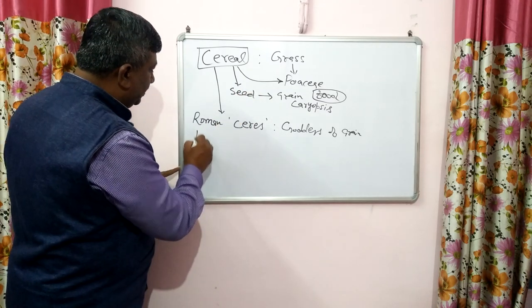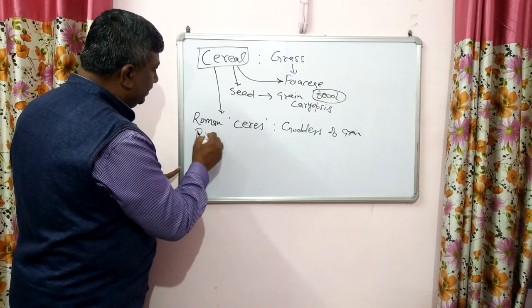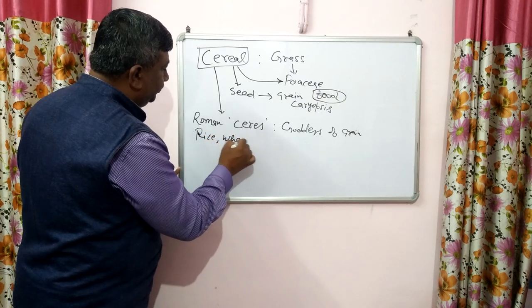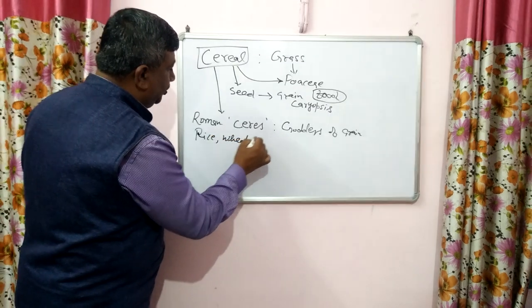Examples of cereals include rice, wheat, and maize.